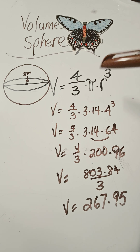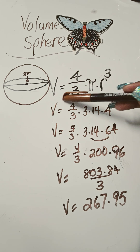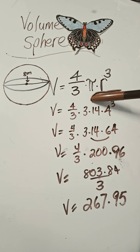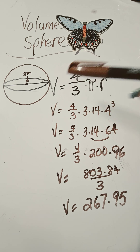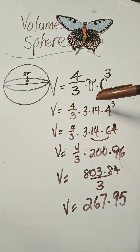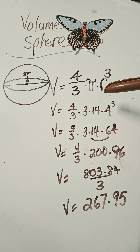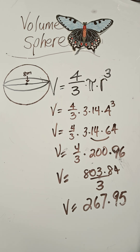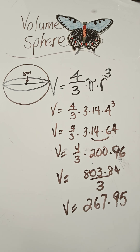So all you really need to remember here is the formula for the sphere. It's the only one that's different. The other two are similar. I hope that helps. Let me know in the comments and don't forget to give a like and don't forget to subscribe. See you on the next one.